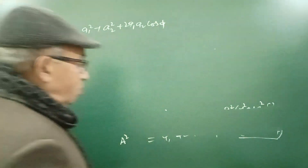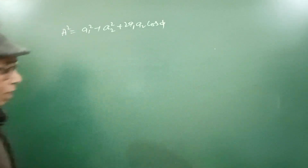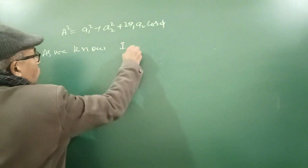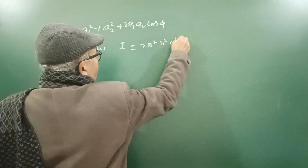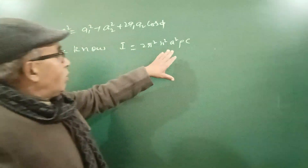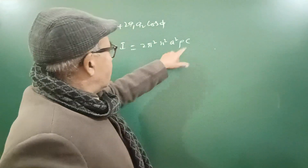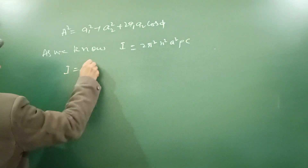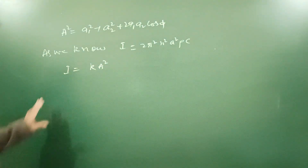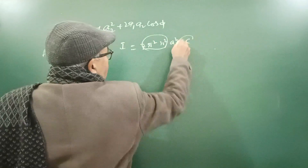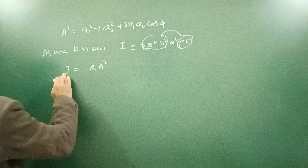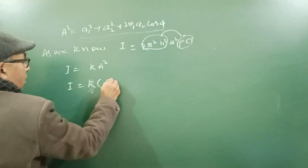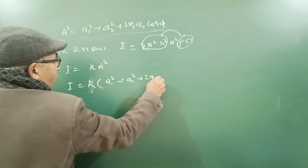Now, this will produce maximum or minimum intensity. As we know, intensity I = 2π²n²a²ρc. Since frequency, medium density, and wave speed do not change, I can write I = kA², where k represents all those constant quantities. So I = k(a1² + a2² + 2a1a2 cos φ). Here we have the intensity of the wave obtained by superposition of two waves in terms of a1, a2, and φ.